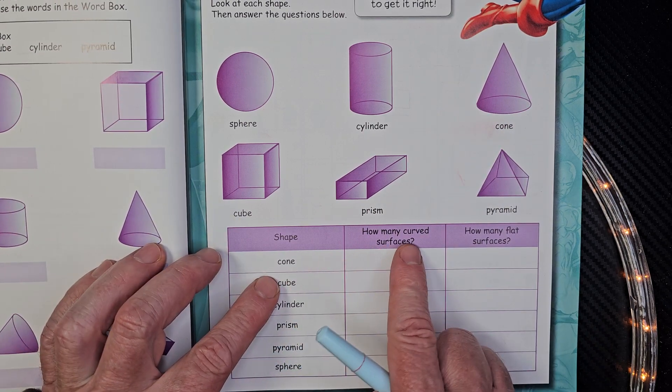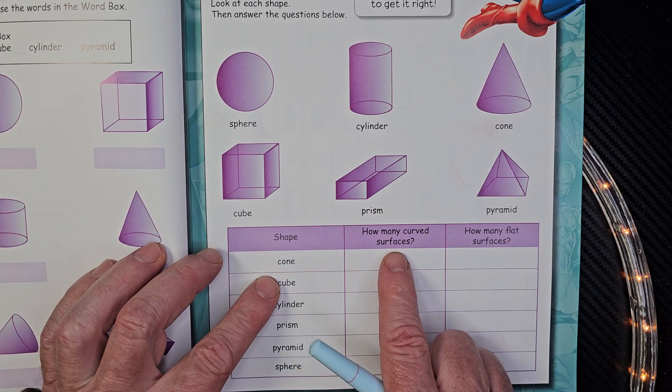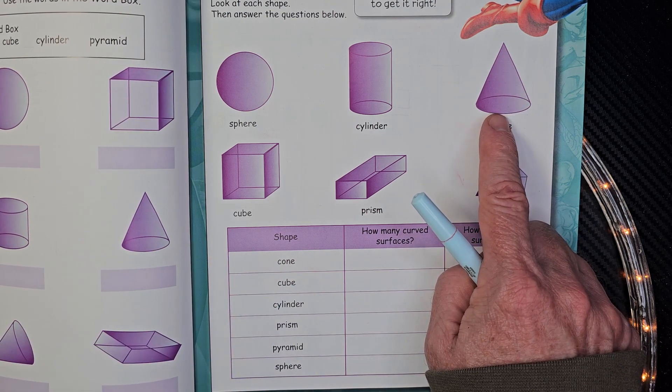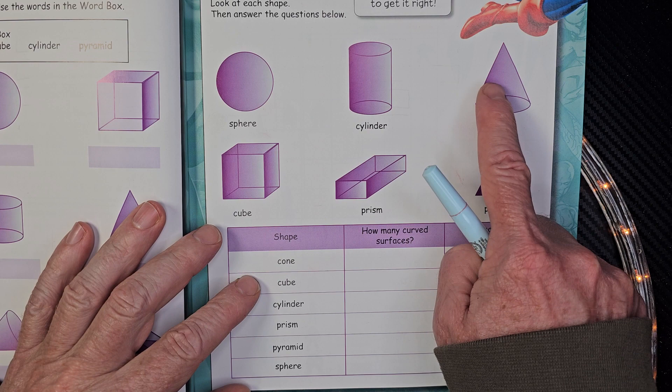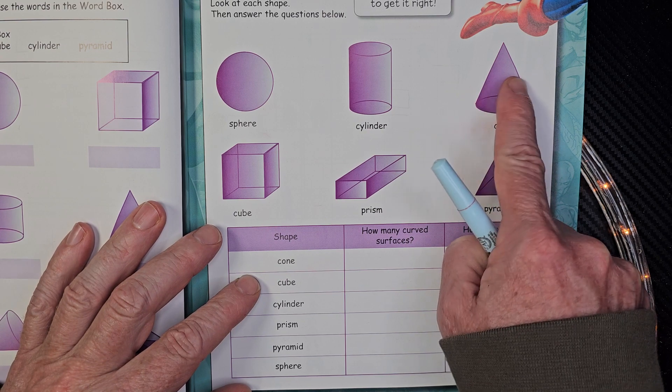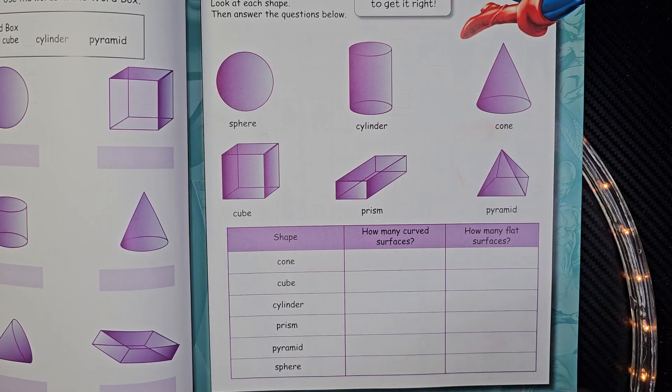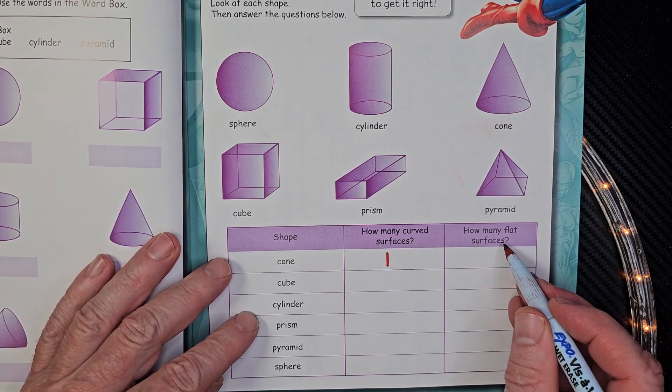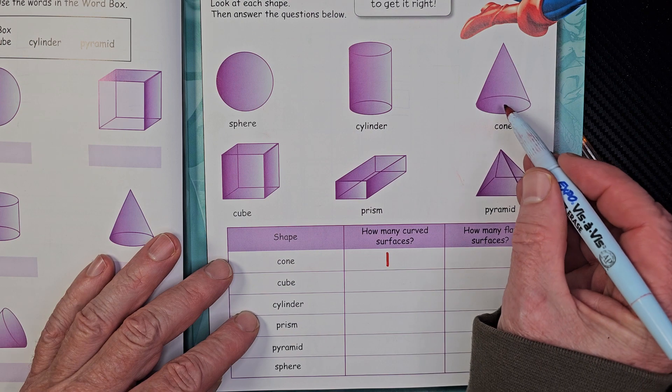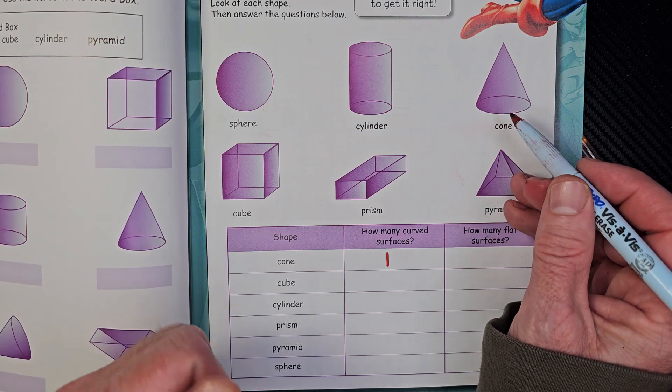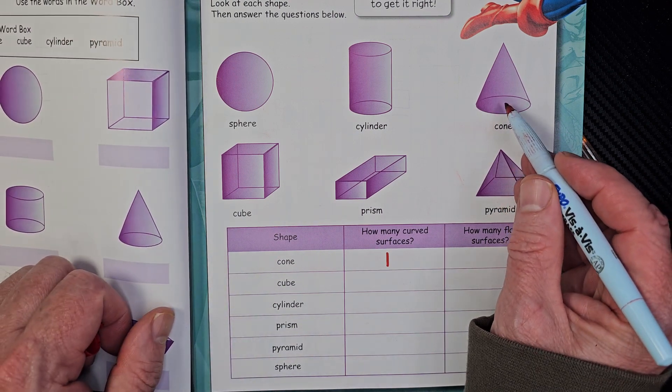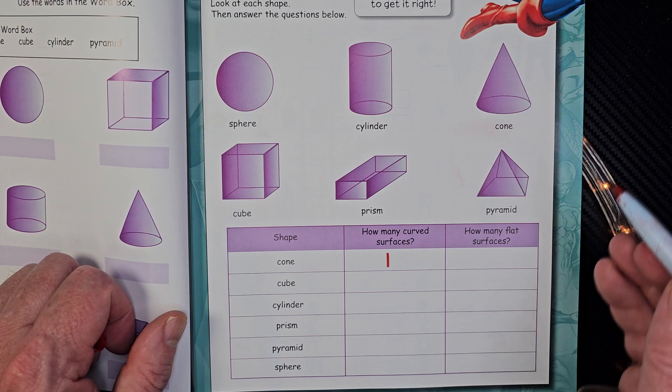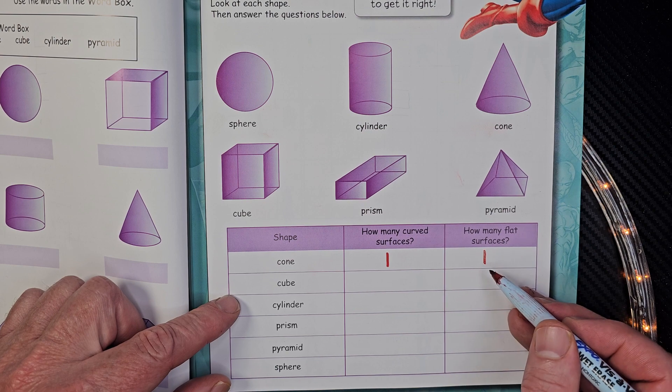Okay, so how many curved surfaces are on a cone? Interesting question. A curved surface would be, there's only one, just a curved surface. Alright, so it's just going to be one curved surface. How many flat surfaces? This part right here, if you turn it over, you'll be able to set something on it. So there is one flat surface.